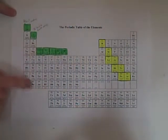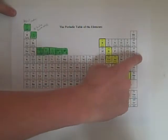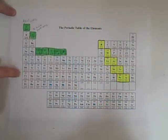This is how you break down the periodic table. These are your alkali metals. These are your alkaline earth metals. These are your non-metals, and these will be your metals.